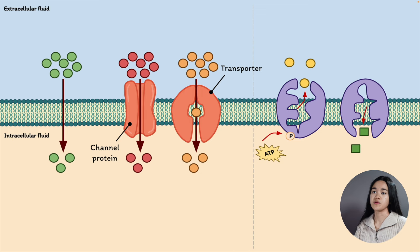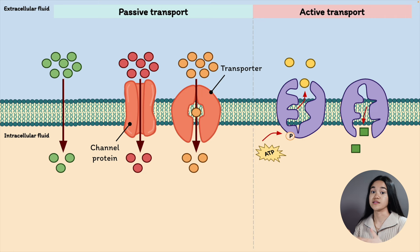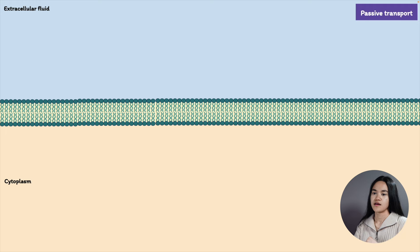There are two ways that molecules can be moved across a membrane. It can occur by passive transport, which requires no energy, or active transport, which requires energy in the form of ATP or adenosine triphosphate. Let's go through passive transport first.